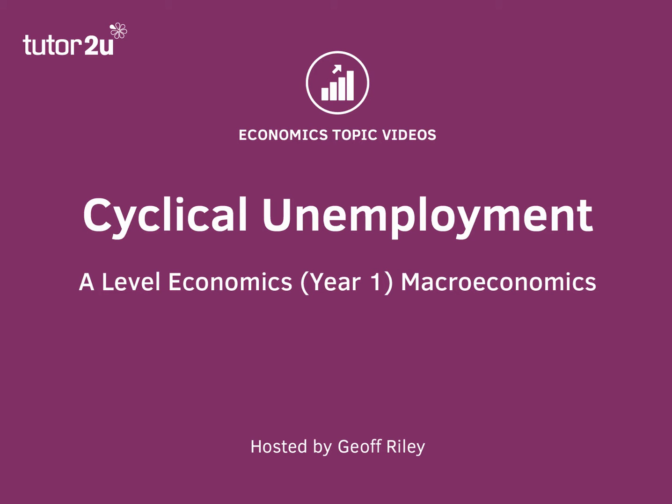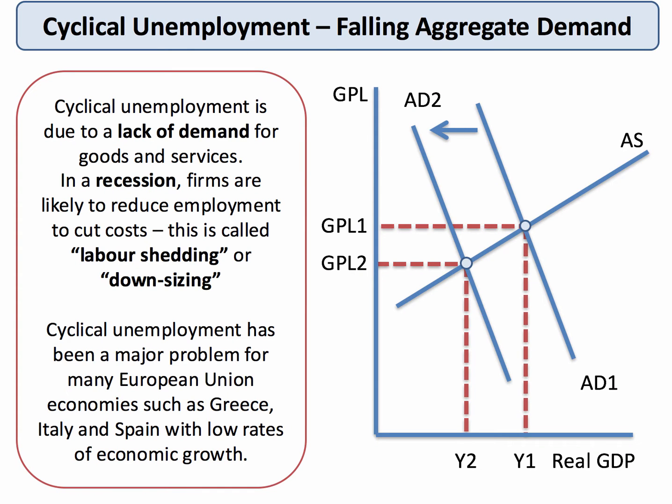Hi there. In this topic video we're going to focus on cyclical unemployment. Cyclical unemployment is also known as demand deficient unemployment or Keynesian unemployment, and essentially it's caused by a lack of aggregate demand or spending on goods and services.